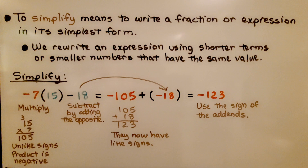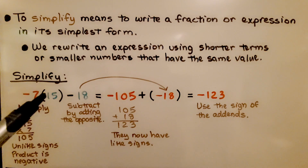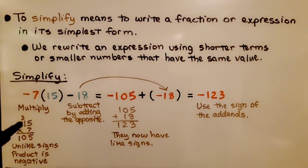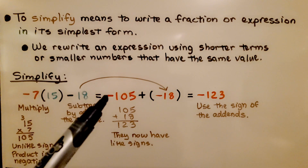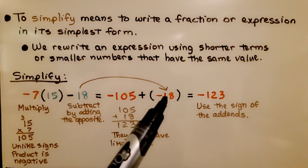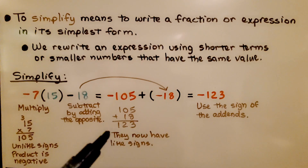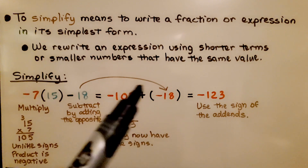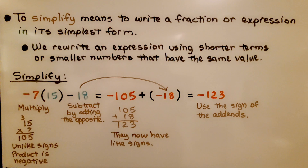To simplify means to write a fraction or expression in its simplest form — we rewrite an expression using shorter terms or smaller numbers with the same value. We need to simplify negative 7 times 15 minus 18. First, we multiply: they have unlike signs, so the product is negative. 15 times 7 is 105, giving negative 105. Now we subtract 18 by adding the opposite: adding negative 18. They now have like signs; 105 plus 18 is 123, and both addends are negative, so our sum is negative 123.